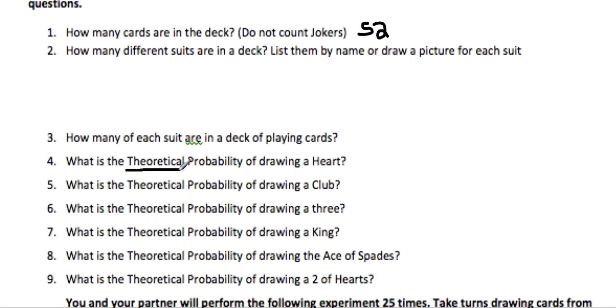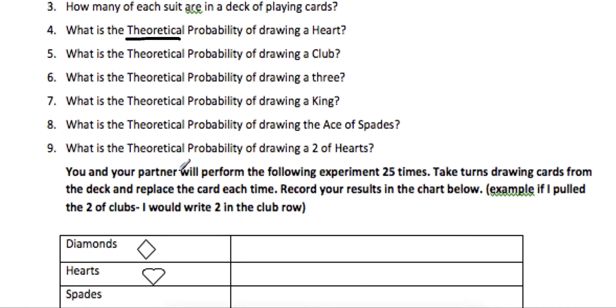This first set of questions is all based on theory, so it's all based on math. Then you and your partner are going to take the deck of cards, and 25 times you're going to take turns. You're going to replace the card each time. So if I pull out a card and it was a two of diamonds, I would write a 2 in the diamonds area. Then I put the card back in, pull out a new one, and this time I got the queen of spades, so I put a Q for queen.